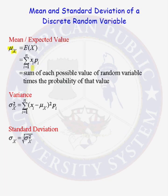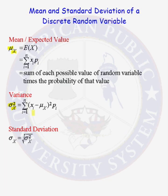The variance of the random variable, indicated with sigma squared, is equal to the sum from i equals 1 to n. You take each data value xi, subtract the mean of the random variable, square that quantity, and then multiply by the probability that the random variable takes on that particular value xi. That's how you calculate the variance, and the standard deviation — represented by sigma — of the random variable x is just the square root of the variance.